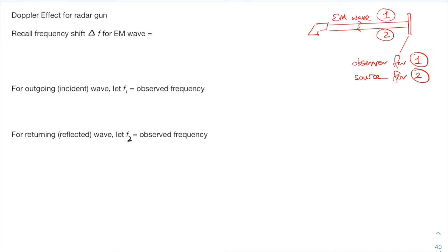So this is an EM wave. We can't use the Doppler equation for sound. We recall the frequency shift delta F for EM wave. And delta F is actually F0 minus F. F0 is the observed frequency, while F is the frequency of the emitted EM wave. Now this is given by the expression F times V over C.